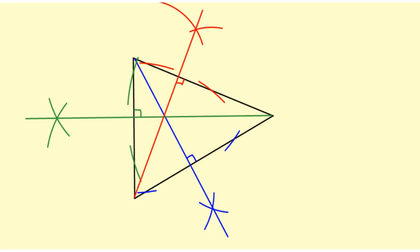The point where these three altitudes intersect, right here, is called the orthocenter.